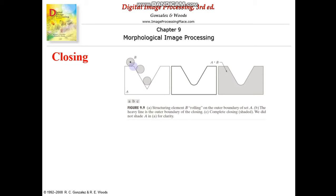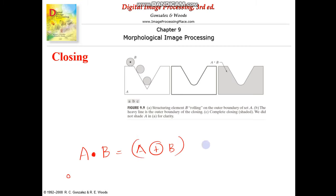Here, set A is a different shape, and set B is the same as in the previous example. The symbol for closing uses a larger circle, whereas opening uses only a small circle. Closing is defined as dilation of A by B followed by erosion — the result is eroded by B. When we geometrically interpret it, the circle is moved through the outside of the object.